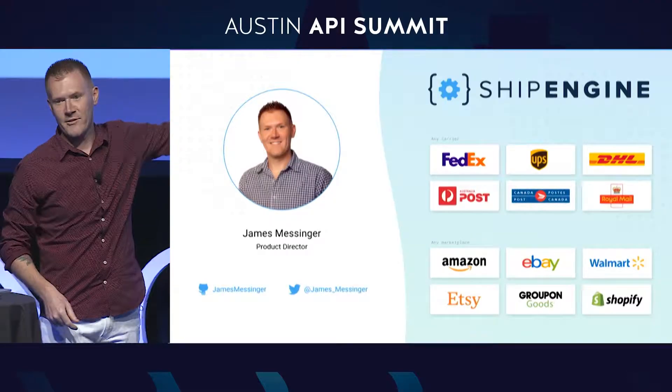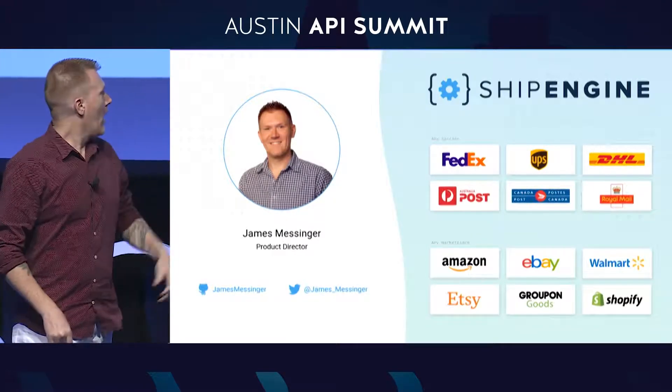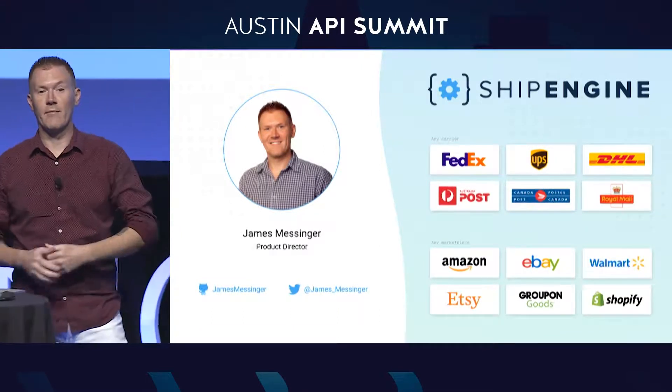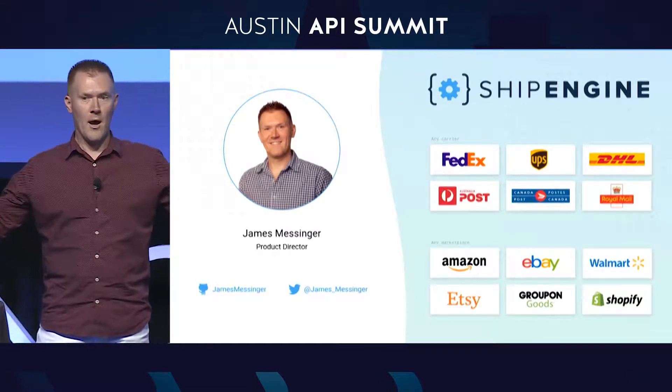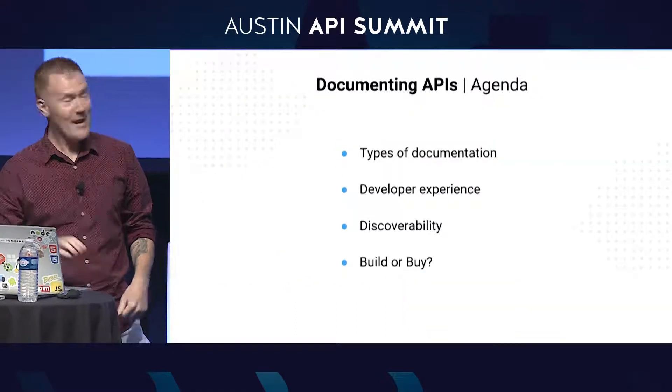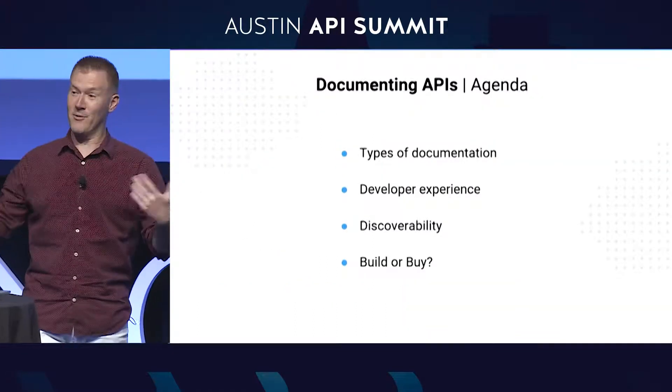We're going to talk about documentation today. I'm James Messenger, the product director for ShipEngine. Quick one-minute spiel on ShipEngine: we are a shipping and e-commerce API. So if you need to ship packages, track packages, validate addresses, compare shipping rates, you can use our API to do that for any major carrier in the world. If you're an e-commerce seller on Shopify, Amazon, Etsy, or whatever, you can use our API to manage and fulfill all of your orders across all of these marketplaces. If you're doing either one of those, talk to me afterwards.